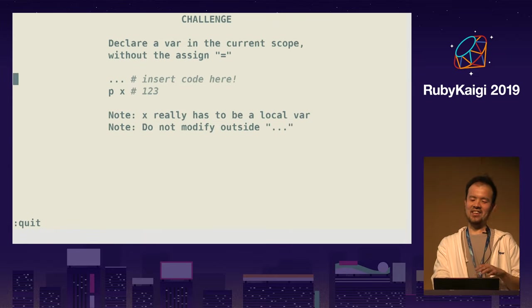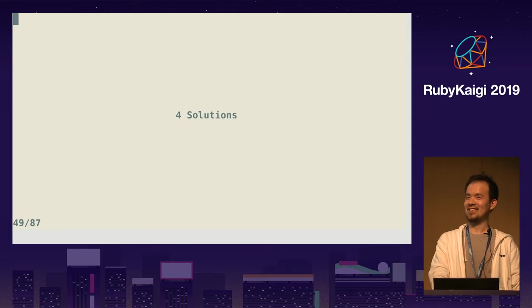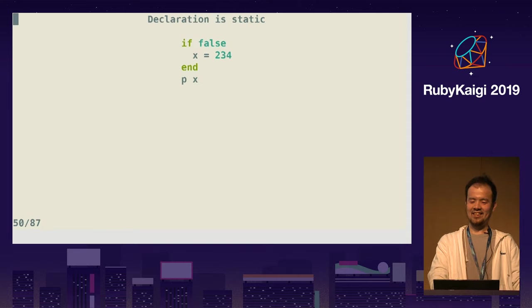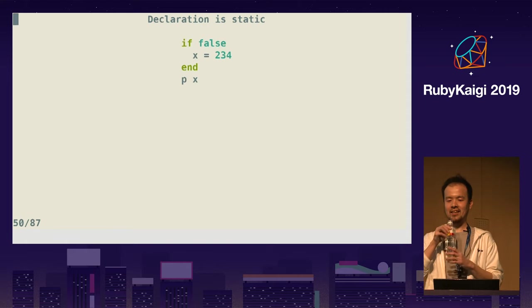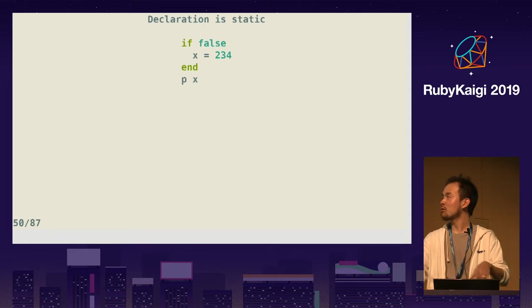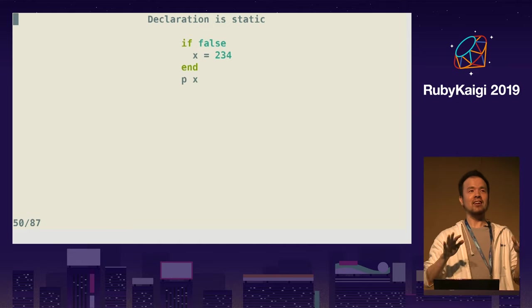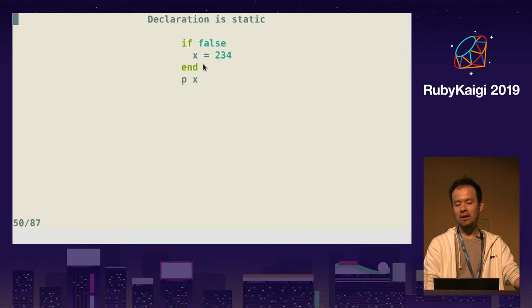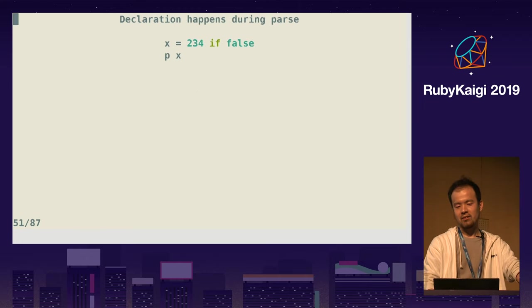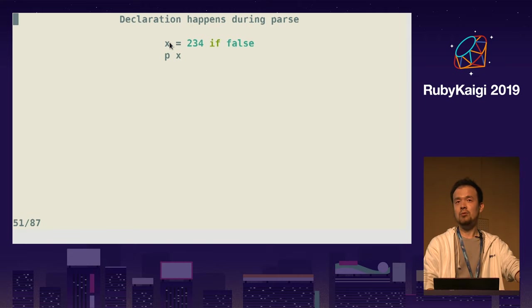So there are many ways to declare a local variable. This is the 50th page. Local variable declaration happens at parse time, so you don't even have to write the assignment. This is totally fine — this is a totally valid way to declare a local variable. The x is a local variable even if the code never executes it. Ruby doesn't execute anything in `if false` — x is nil, of course.